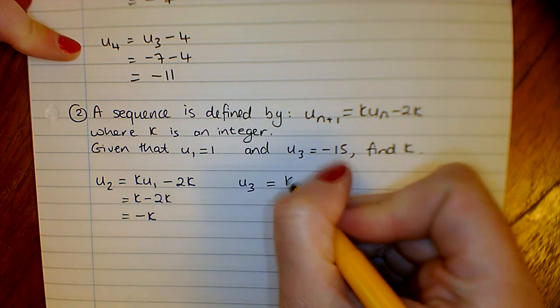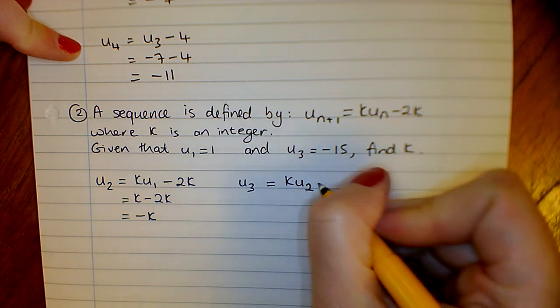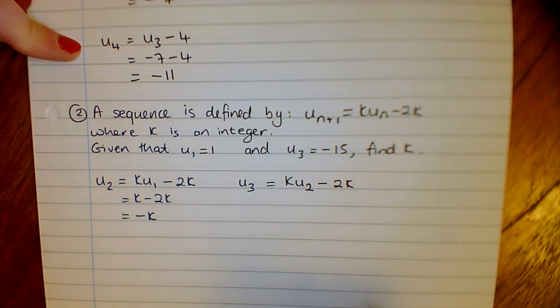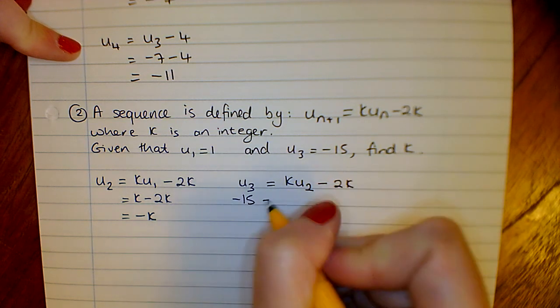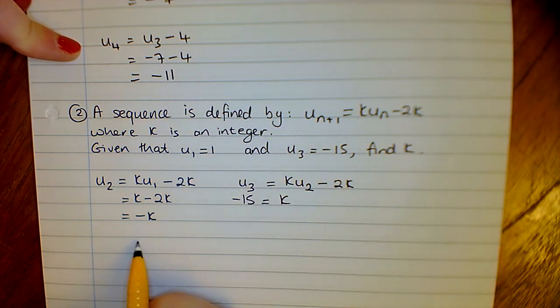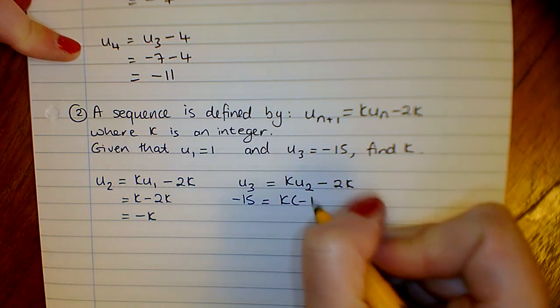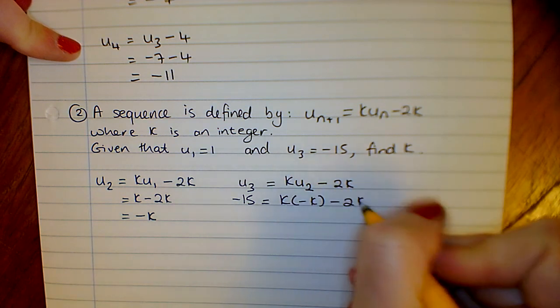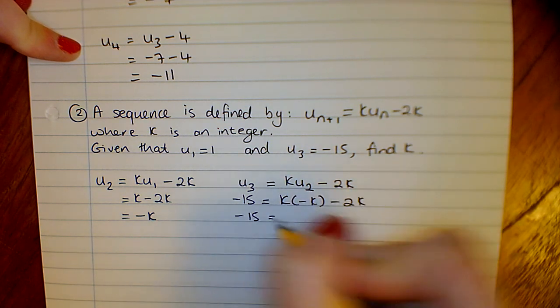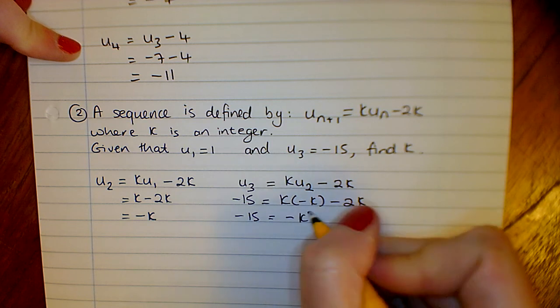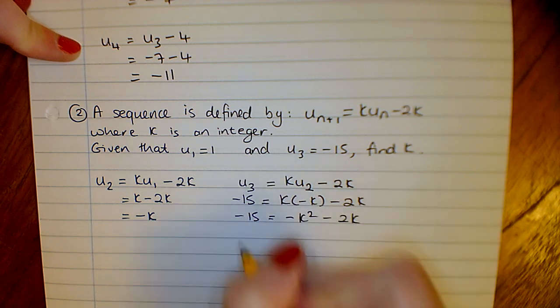Our third term would be k times our second term, minus 2k. Now we know our third term is minus 15, so we have a quadratic in k.